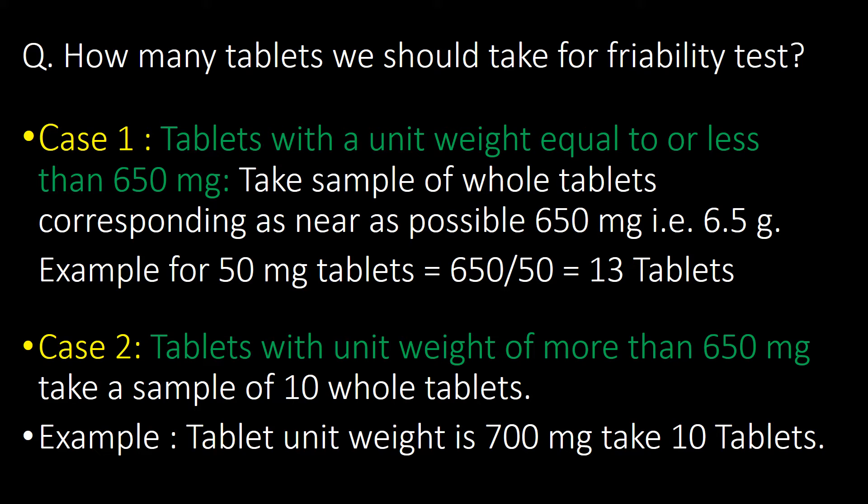How many tablets should we take for the friability test? Consider two cases. Case one: tablets with a unit weight equal to or less than 650 mg — take a sample of whole tablets corresponding as near as possible to 650 mg (6.5 g). For example, if a tablet weighs 50 mg, divide 650 by 50 to get 13; take 13 tablets. Case two: tablets with a unit weight of more than 650 mg — take a sample of 10 whole tablets.